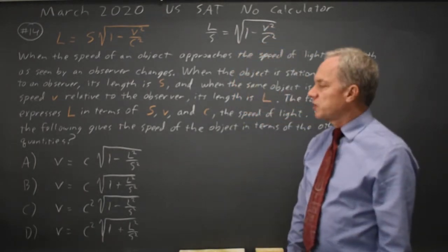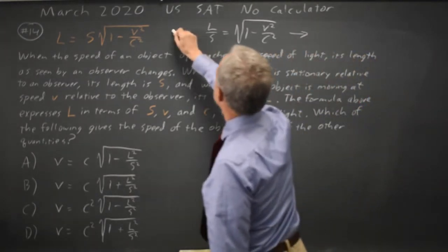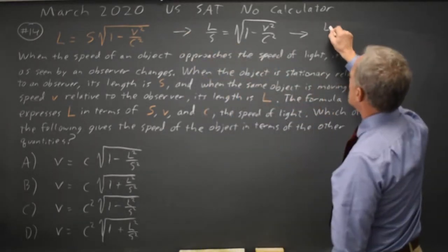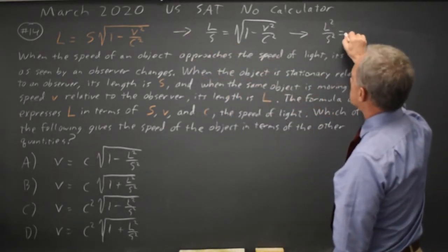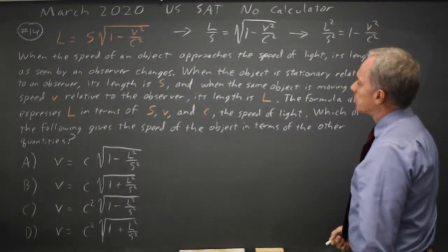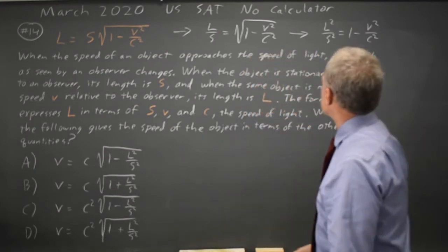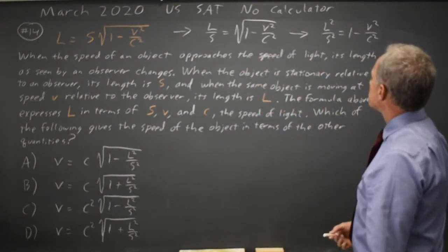To get V by itself I have to get rid of the square root so I'll square both sides and that gives me L squared over S squared equals 1 minus V squared over C squared. And all the choices have L squared or S squared so I feel like I'm on the right track.